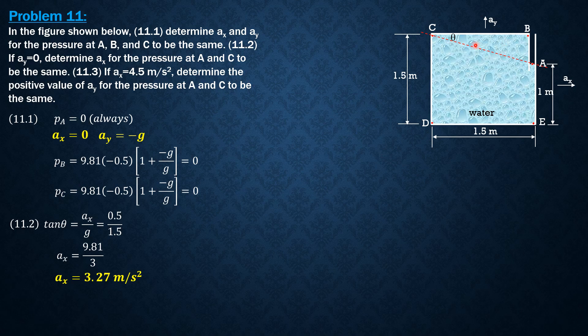So still, because there is AY and we're looking for the positive value, this is still the resulting surface so that the pressure at C is 0. So there's no head.